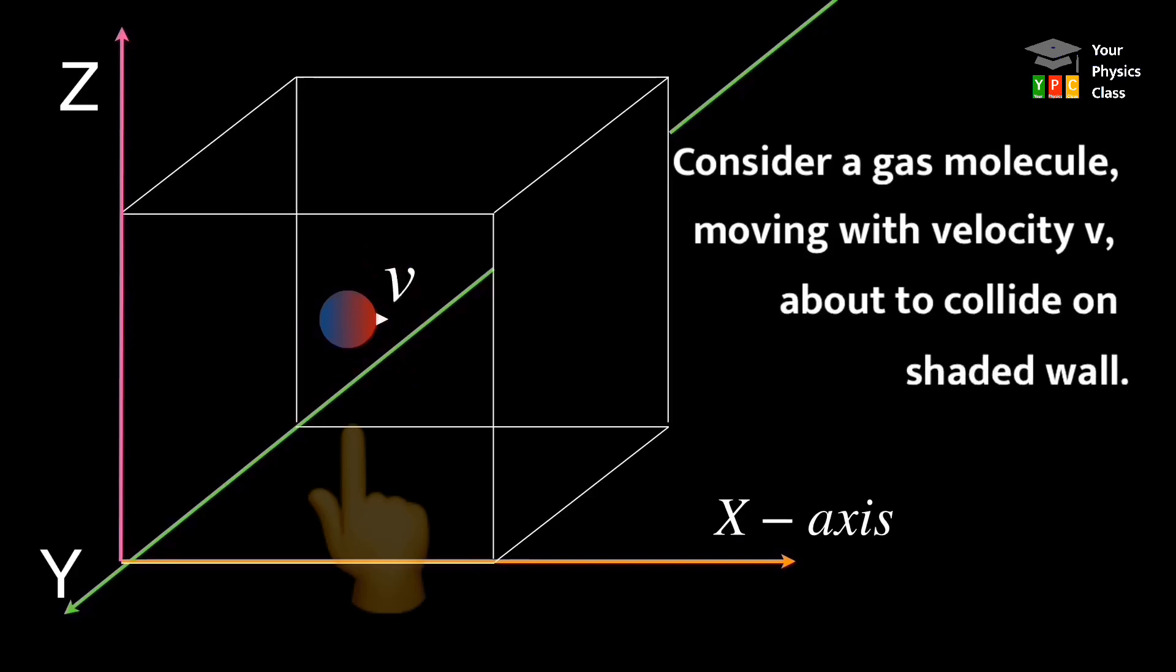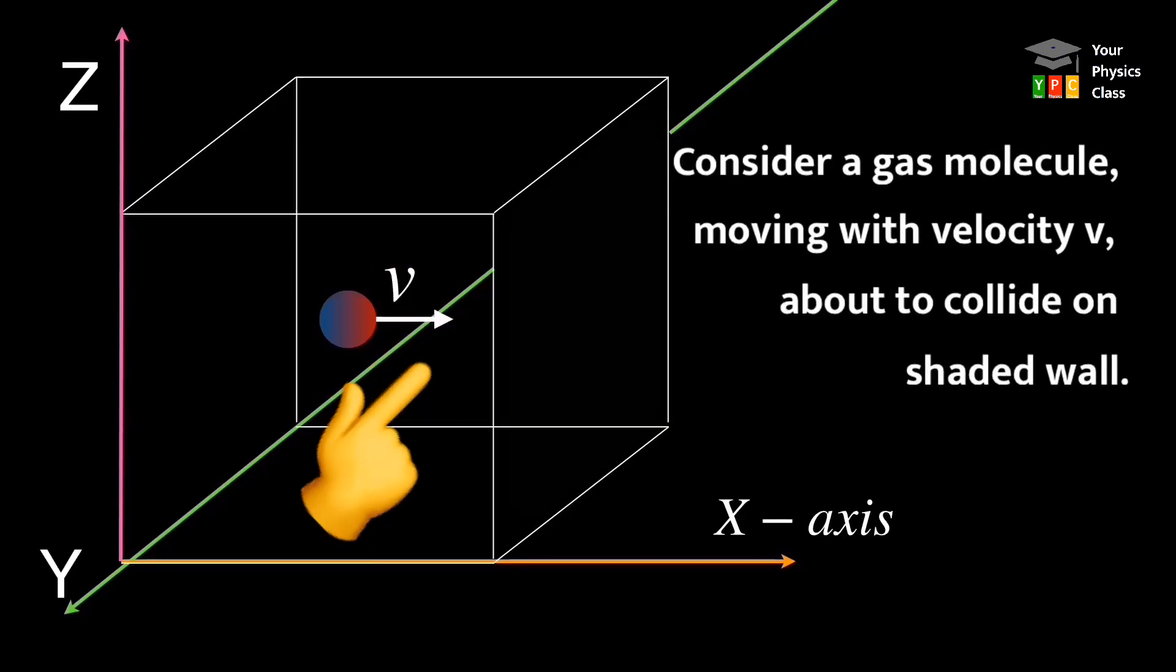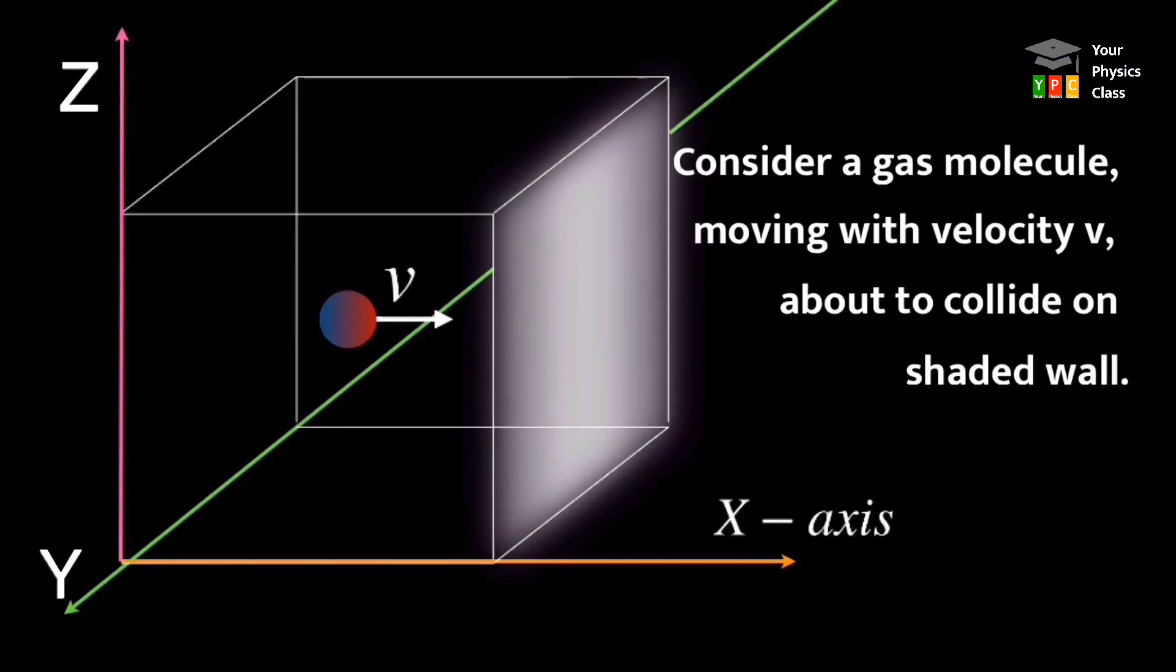Consider, a gas molecule moving with velocity V about to collide on opposite wall. Jan rahe, yahan KTG ke nassar collision perfect elastic hoga.